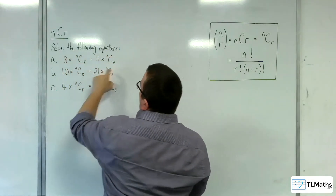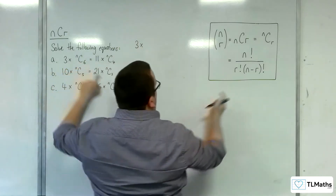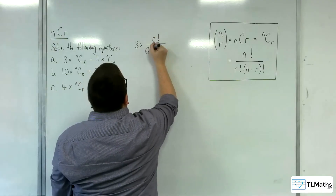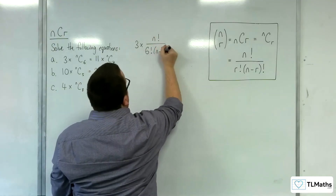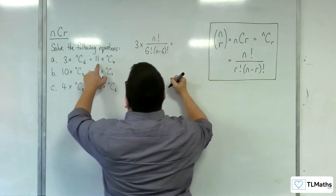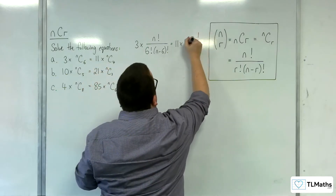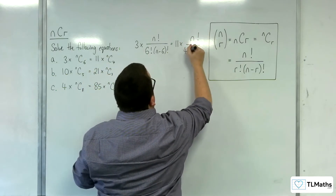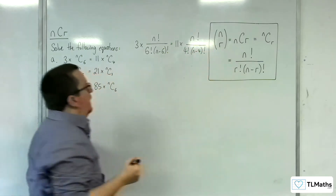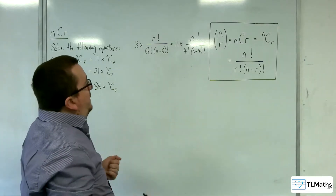So we're going to have 3 times nC6, which using the formula is n factorial over 6 factorial times (n minus 6) factorial. And then we've got 11 times nC4, which is n factorial over 4 factorial times (n minus 4) factorial. We need to solve this equation.